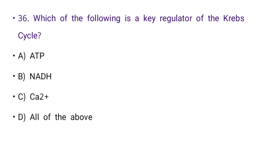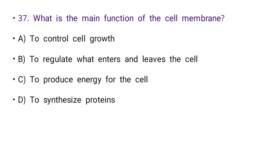Next: Which of the following is a key regulator of the Krebs cycle? Options: ATP, NADH, Ca2+, or all of the above. The answer is D: all of the above.